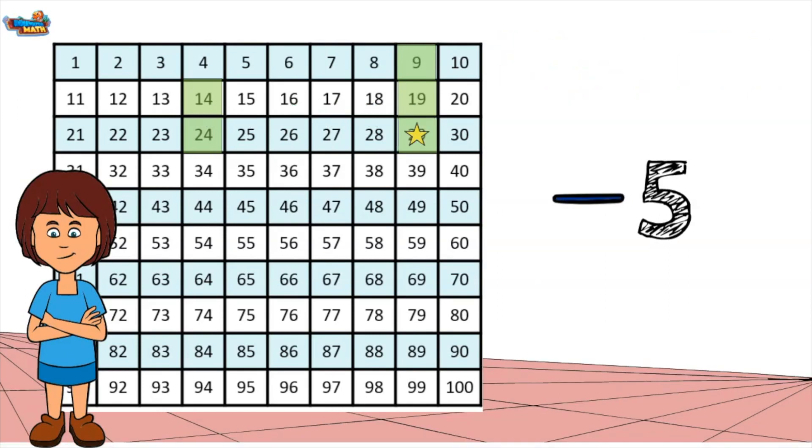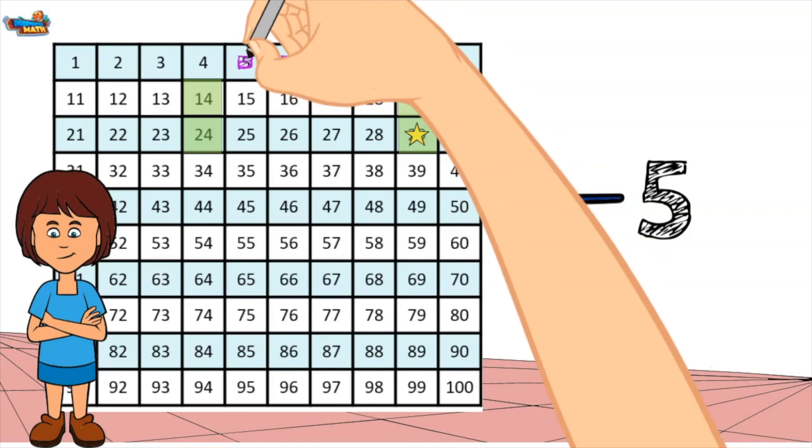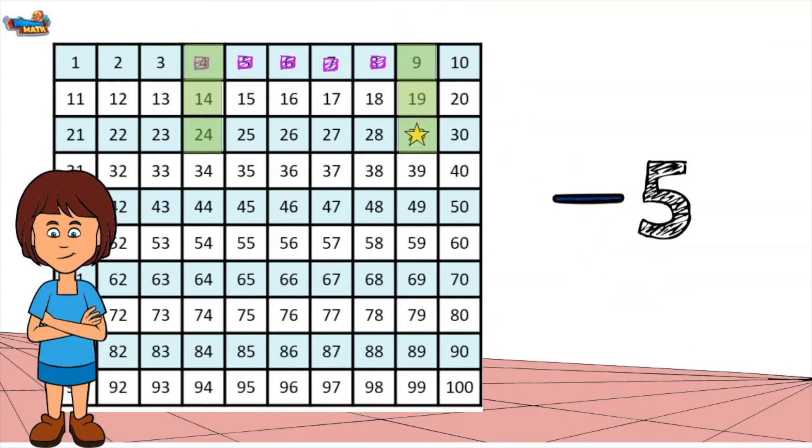To find the next number in the pattern, I must apply the rule minus 5. I start at the last number in the pattern, 9, and subtract 5. I land on the number 4. The next number in the pattern is 4.